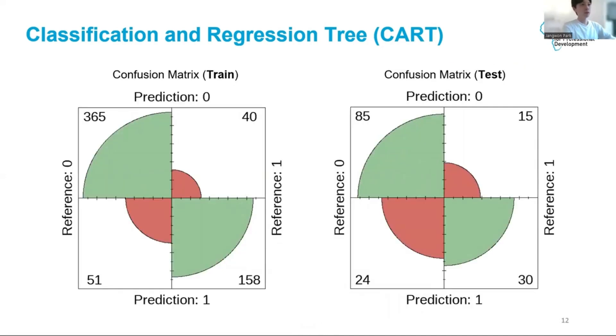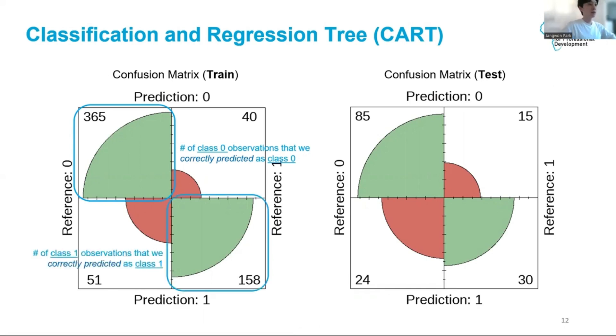Let's try to understand the model's performance. In these plots, the top left corner tells us the number of class zero data points that we correctly predicted as class zero. In this case, 365 of them. Of course, the higher the better in general. In the bottom left corner, we have the number of class one data points that we correctly predicted as class one. In this case, 158.